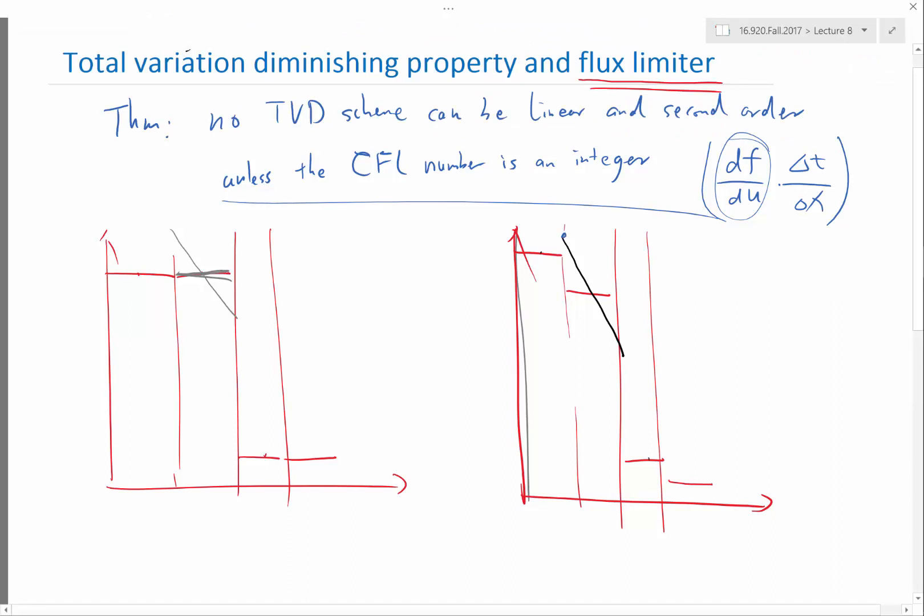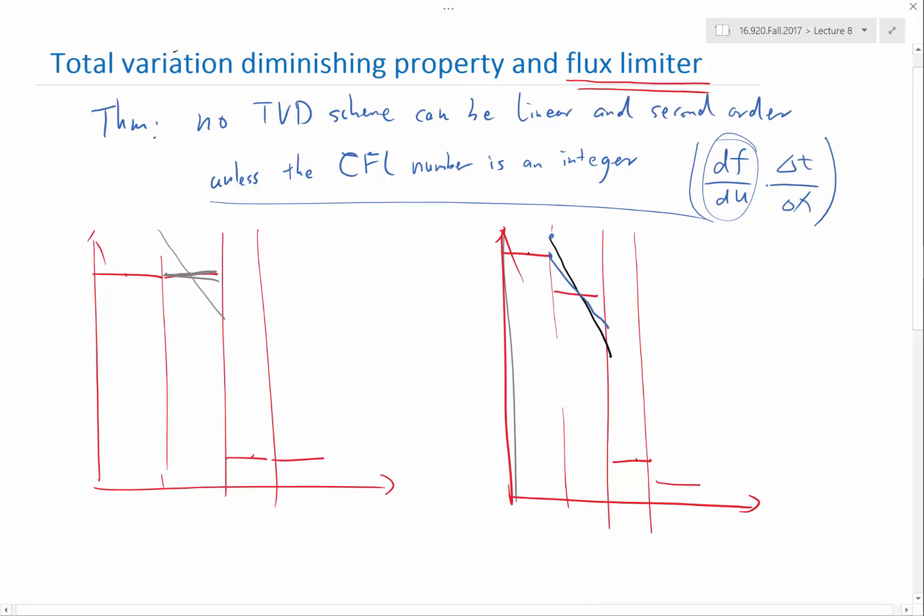The maximum slope I can reconstruct is actually this, because that's the maximum slope I can construct without this point overshooting the left cell value and thereby creating a new extrema. So this limiter basically limits how much slope you want to reconstruct.